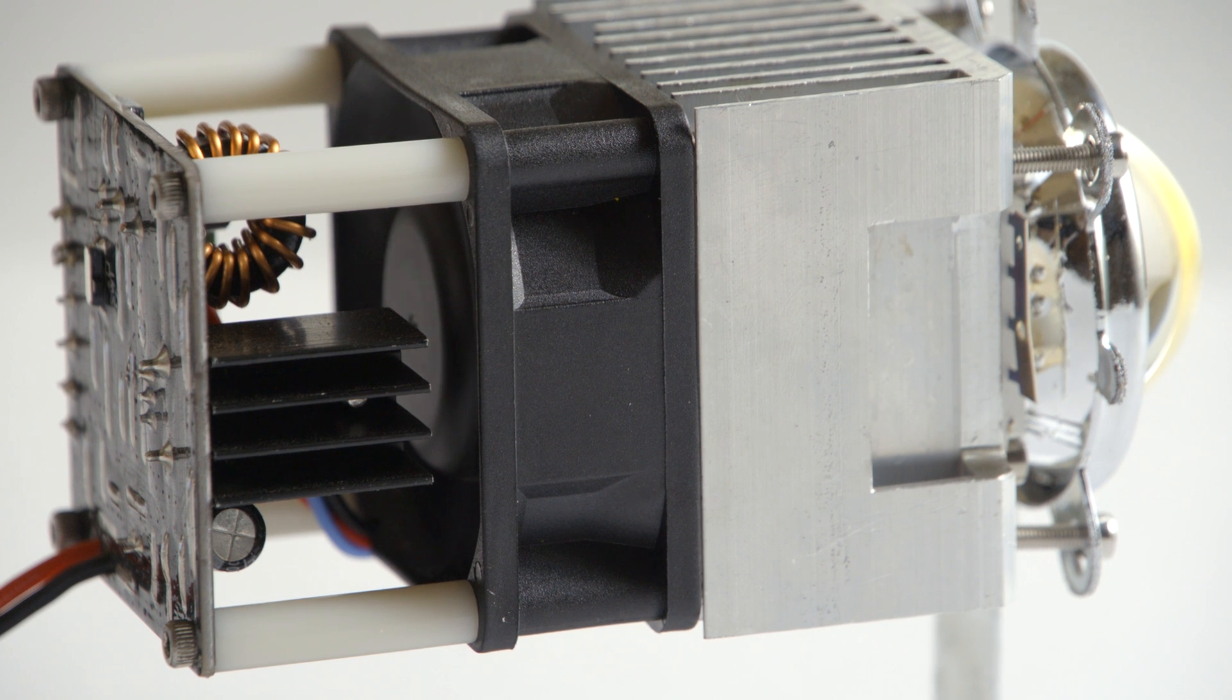Once powered on, be sure to keep your fingers away from the fan blades because they are sharp and will cut through flesh. You'll notice a yellow fringe around the light beam. If you'd like to get rid of this, see the instructional video in the tutorials section of our website.